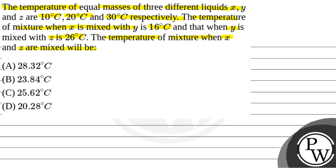The temperature of mixture when X and Z are mixed will be. So basically, we have three mixtures X, Y and Z. The temperature is 10, 20, 30 degrees. Now, when we mix X and Y, X plus Y is 16 degree Celsius. When we mix Y plus Z, we get 26 degree Celsius. We have to know what X plus Z is.